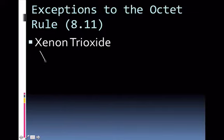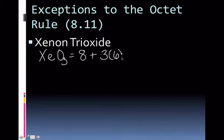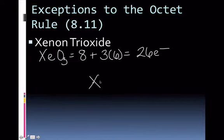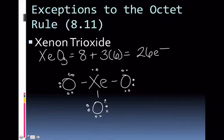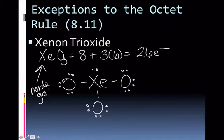Xenon trioxide is XeO₃. Xenon has 8 valence electrons (it's a noble gas), and oxygen is 3 × 6 = 18, giving 26 total. Put xenon in the middle, attach 3 oxygens, and give everyone 8 electrons: 8 + 16 + 2 = 26. This is not an exception to the octet rule — everybody has 8. I included this example because xenon is a noble gas you'll commonly encounter in these problems.